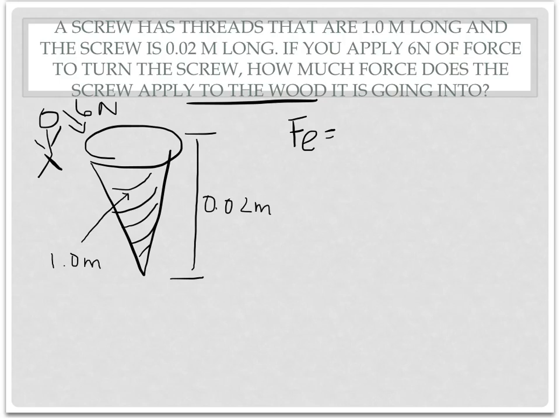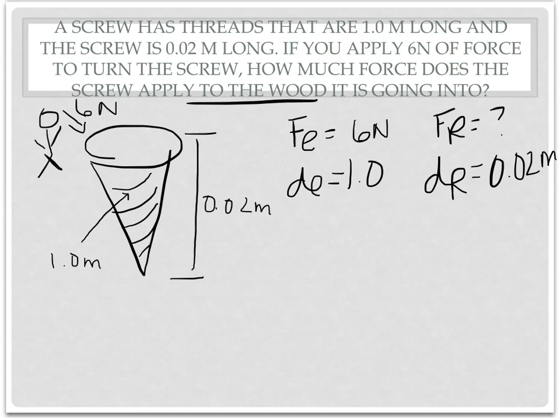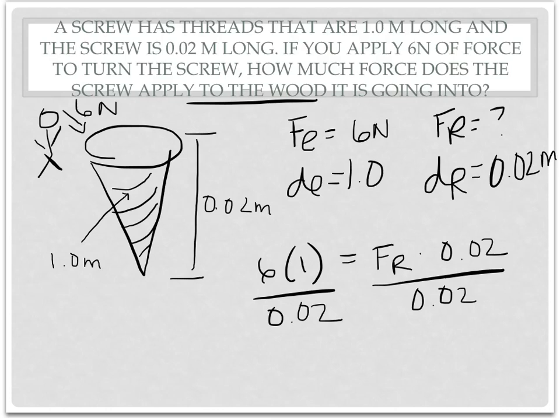So we know FE is 6 newtons because that's what you're doing. DE, the distance you actually caused the screw to go through, is 1 meter. So you're turning it through the threads. FR is our unknown. And DR is the length of the screw, so how far it can actually get into the wood. That's 0.02 meters. So you're going to have 6 times 1 equals FR times 0.02. To get FR by itself, you divide by the 0.02. Now 6 times 1 is 6, so 6 divided by 0.02 is 300. So your FR is 300 newtons.